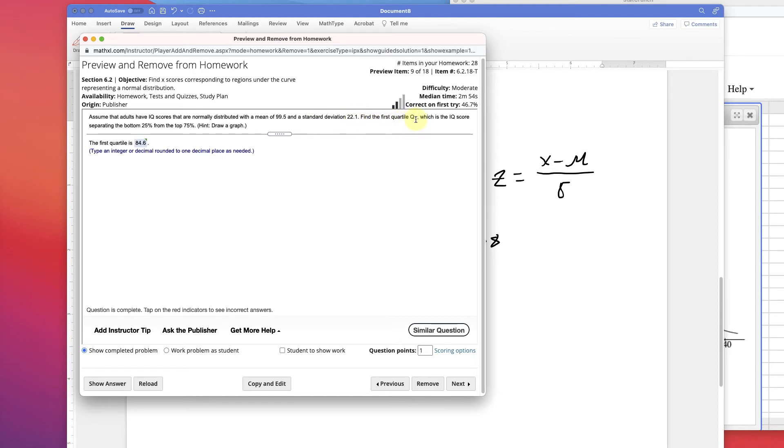Find the first quartile, so 25%, right? Which is the IQ score separating the bottom 25% from the top 75%. So 84.6 is the answer.